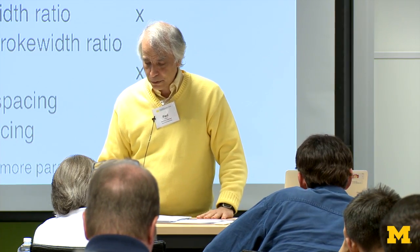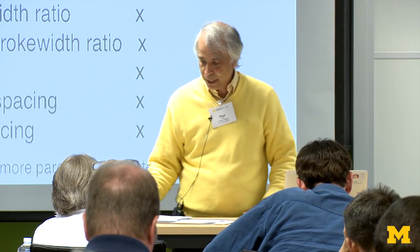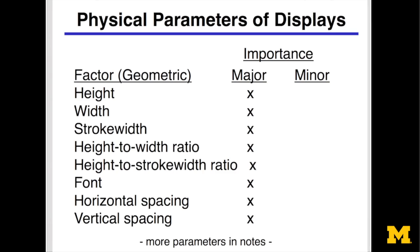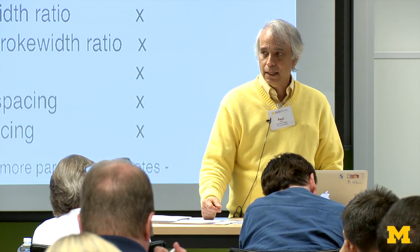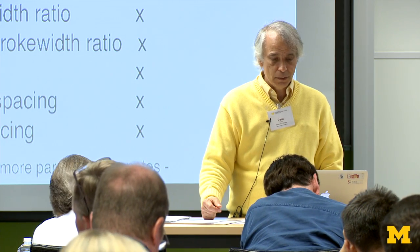For displays, there are a number of physical parameters that matter geometrically. For characters, the most important thing is the height. If it's tall enough and you get enough contrast, you're good. Yes, narrow versus wide matters, but not as much as height. Stroke width — the width of the line — matters, but not as much as height. So number one is get the height, and then you want to get all the other things as well.